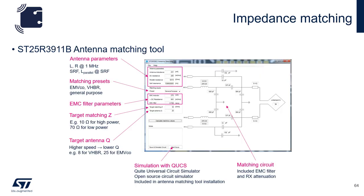The next step is to take the measured parameters and input them into the 3911B antenna matching tool, available online. Here we would put in the antenna values that we measured, then select a preset — either EMVCo, VHBR, or General Purpose. What this preset does is set the cutoff frequency of the EMC filter, the target matching impedance, and the target antenna Q. These values can also be overridden if need be. There is also an area where you can put in the DC resistance of the inductors used in the EMC filter. We would then hit Calculate Matching Values and the matching circuit would be populated with values.